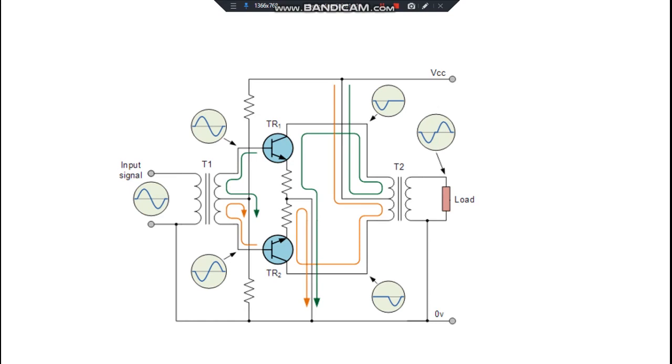One is given in phase to the signal input signal, whereas the other signal for the bottom transistor, that is the PNP transistor, is out of phase.